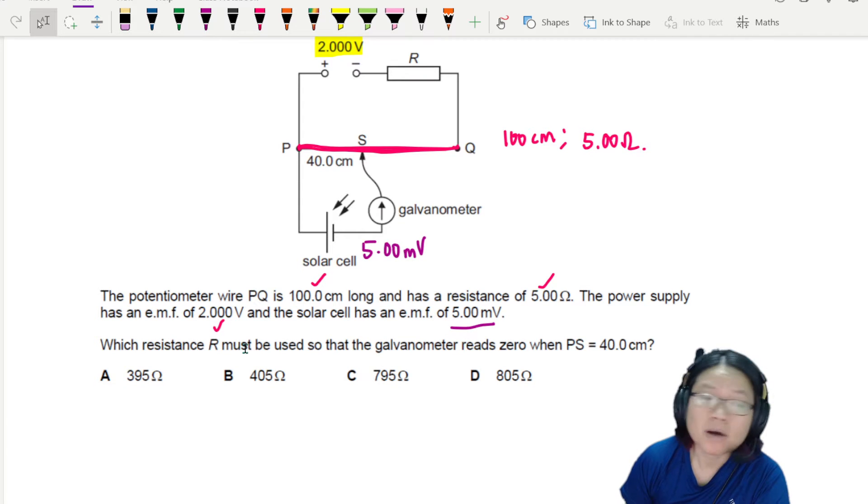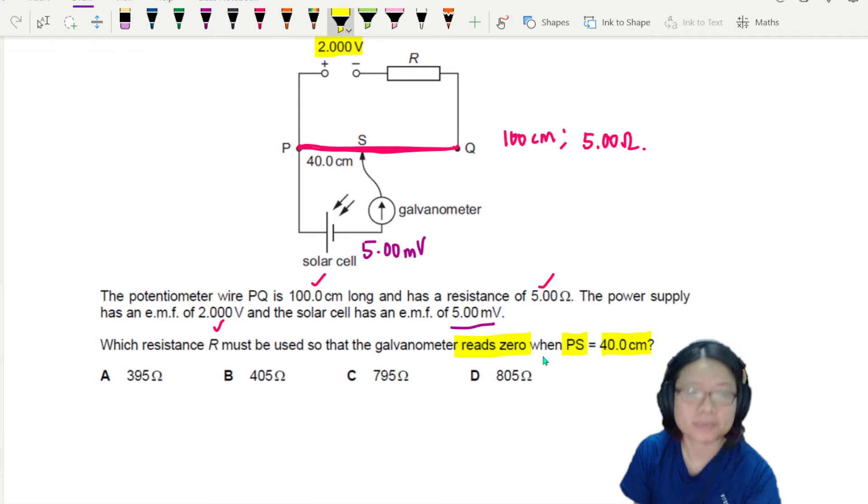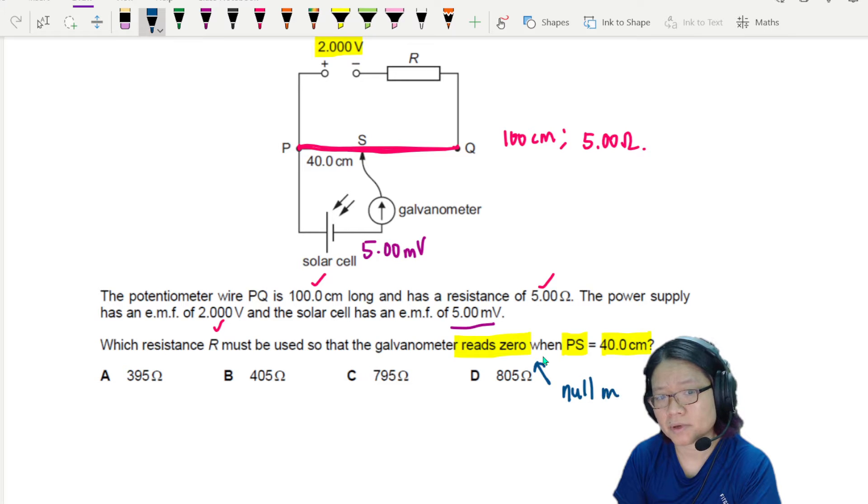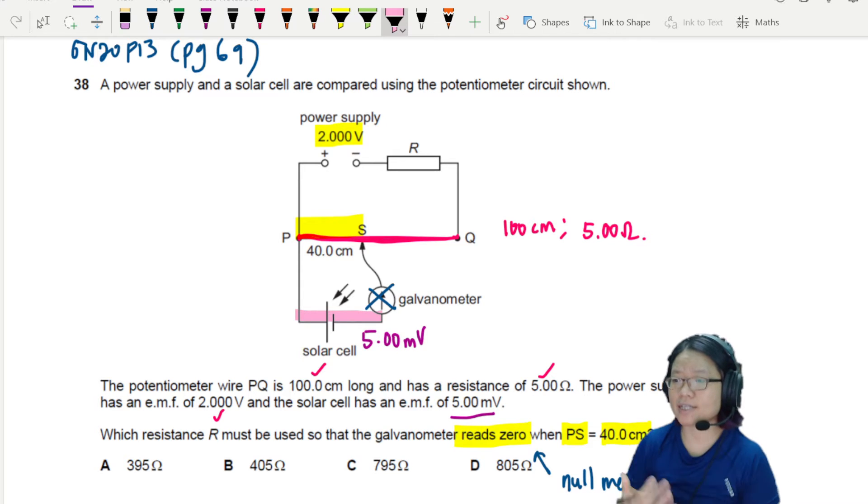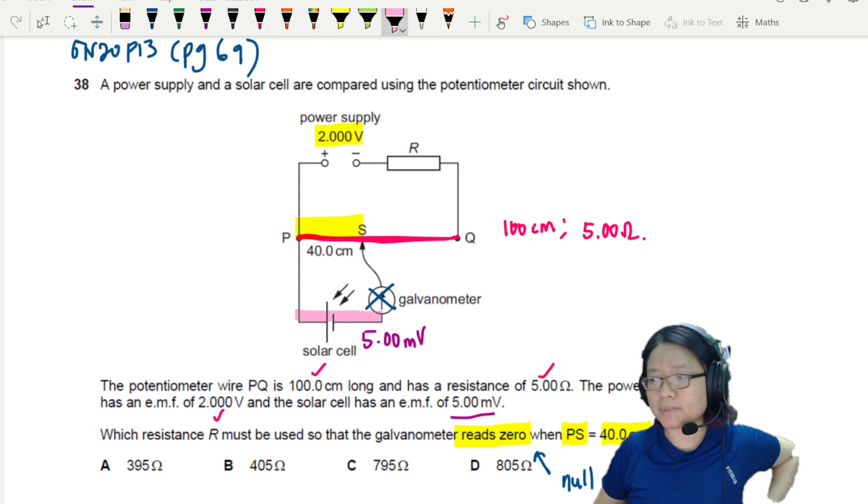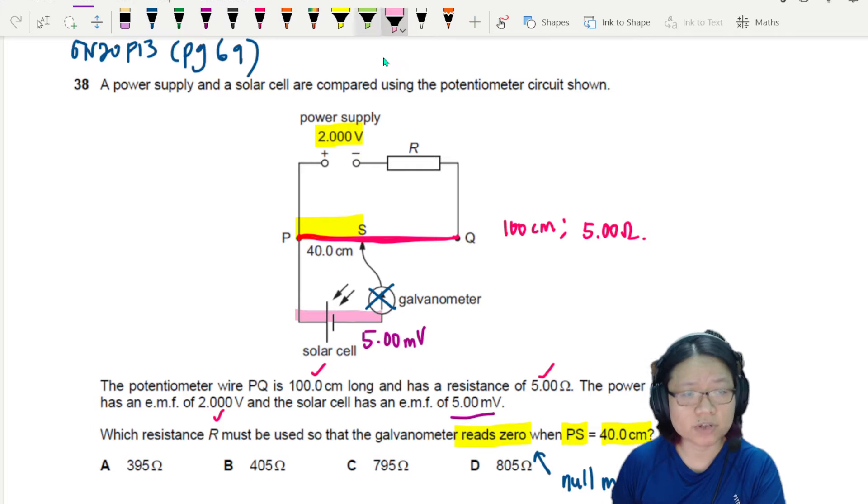Which resistance R must be used so that the galvanometer reading reads zero when PS is 40 cm? Again, we are using the null method. When the potentiometer works because you're using the null method, there's no current flowing through the galvanometer. What do we know when that happens? We know that the potential drop from P to S must be the same as the potential drop across the solar cell.